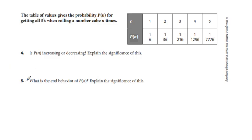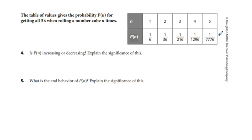Odd number problem — we're going to look at five. Problems 4 and 5 are related to a table. Is P of N decreasing? Explain the significance. And then problem five: what is the end behavior of P sub N? The table shows the probability of getting all fives when rolling a number cube — a die — N times. If you roll it once, you get one out of six. Basically, you're multiplying the denominator by six every time. So these numbers are getting smaller.